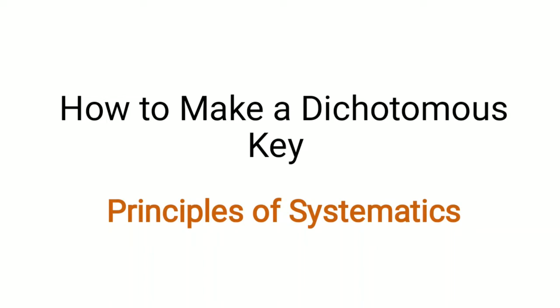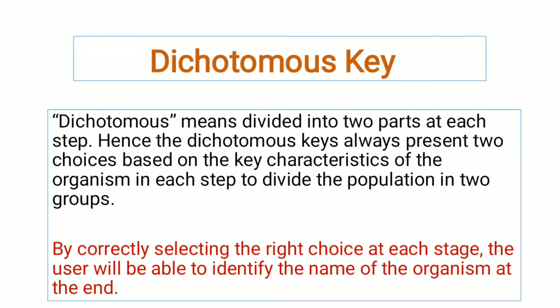In this video we will discuss how to make a dichotomous key. The word dichotomous means divided into two parts. A dichotomous key is a type of taxonomic key in which you divide organisms into two categories based upon their characteristics at each step.